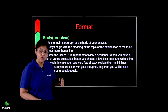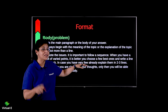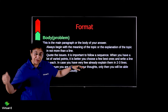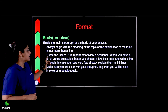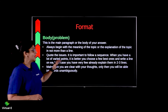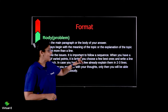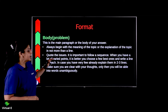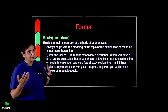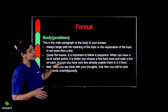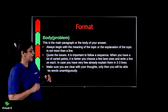Quote the issues — put up the issues, write down the problems. It is important to follow a sequence. When you have a lot of varied points, it is better to choose a few best ones and write a line on each. In case you have very few points already, explain them in two or three lines. Whenever you have the points, pick the best ones and write two or three lines on them.